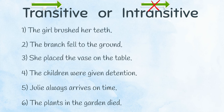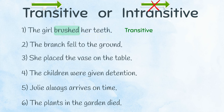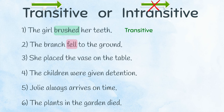Let's check the answers. In the first sentence, the action of the verb brushed moves through the subject, the girl, to the direct object, her teeth. This means brushed is transitive. Number two: there is no direct object that receives the action fell. The branch fell — to the ground is a prepositional phrase telling us where it fell. Because the action fell does not move to a direct object, fell is an intransitive verb.